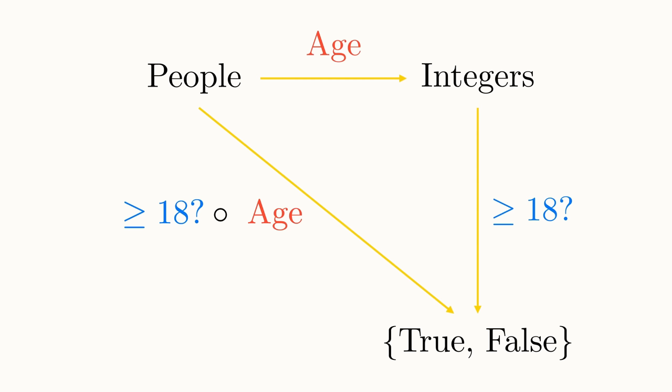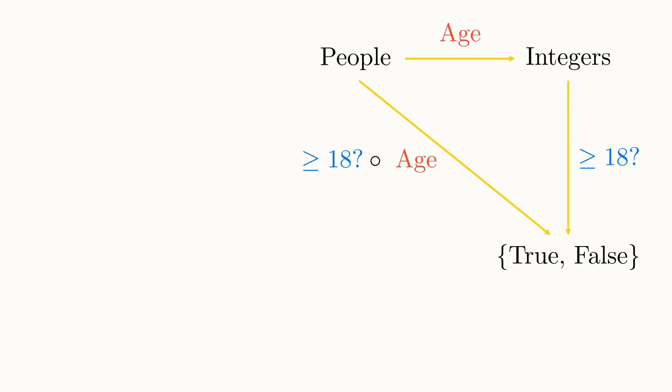Before we can attempt to use abstraction to expose the essence of composition, we need to look at one final detail. Consider a function that maps from the set of people onto the set of people. There are many such functions, such as the function that maps a person to their father, but one of these functions is of particular importance.